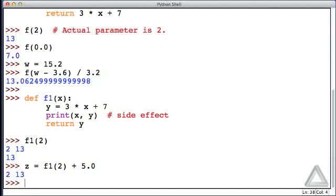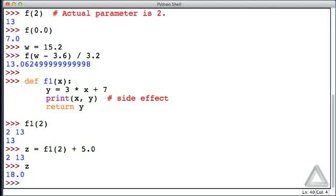When we hit return, we still see the output from the print statement—we still see that side effect—but now we are not seeing the return value. Instead, f1 returned 13, that was added to 5.0, and we should see that z then is 13 plus 5.0, so hopefully z is 18.0, and indeed it is.